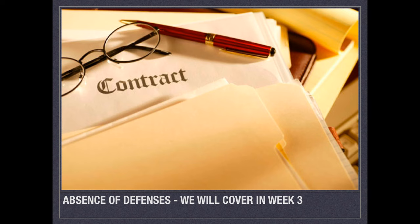We're going to cover absence of defenses in week three. As a quick review of this slideshow: we're talking about the validity of contracts. The first thing to look to is whether there was mutual assent — did you have an offer and acceptance and all that goes with that? Second, was there consideration — was there a bargain-for-exchange and everything that goes with that? The third element, absence of defenses, will be covered next week. If you ever have any questions, please don't hesitate to contact me.